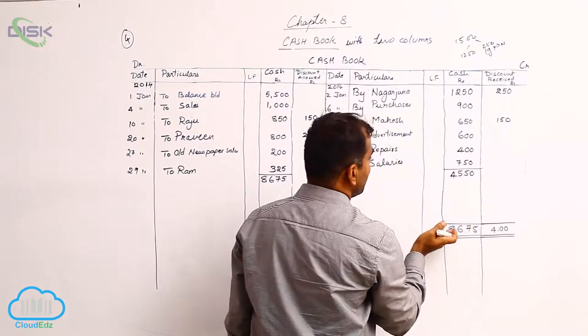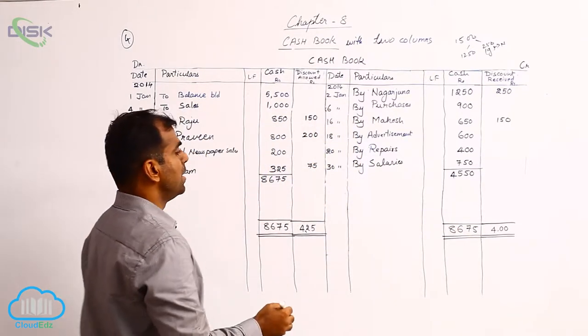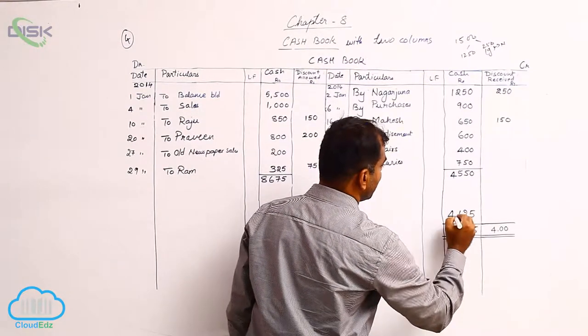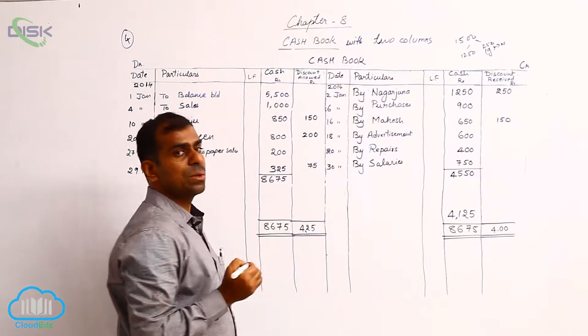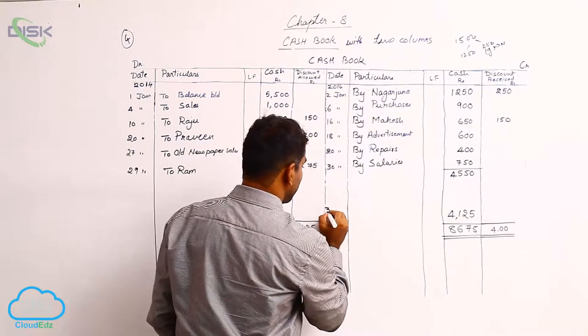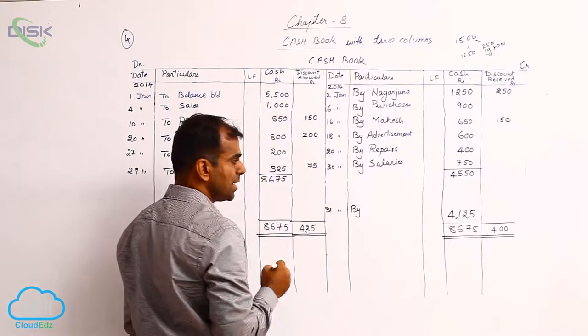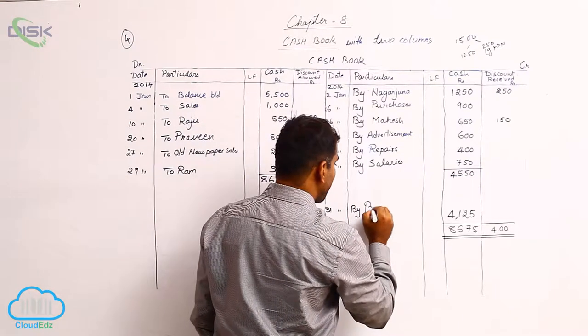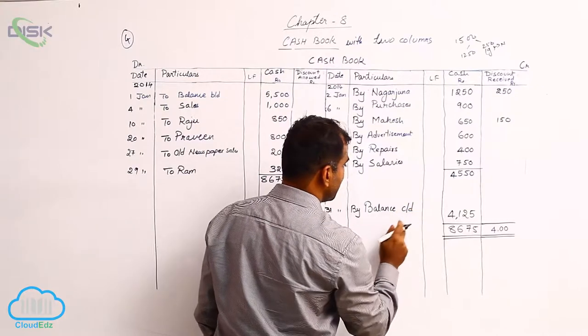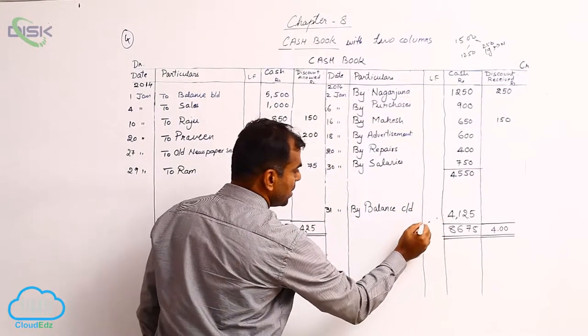8,675 minus 4,550 gives us a balance of 4,125. This is our closing balance for the month of January. You give the date as 31st, and 'By' is the constant because we are writing the balance on the credit side. You say 'By Balance.' Since you are closing the cash ledger, it is carried down, so we should write this again on the opposite side.